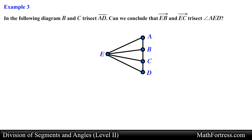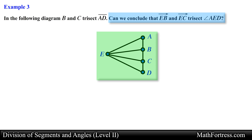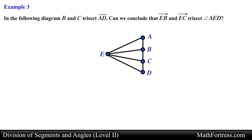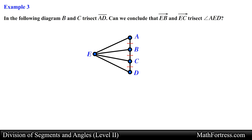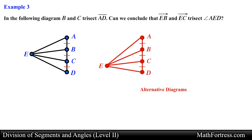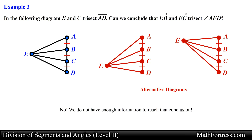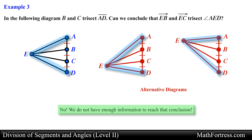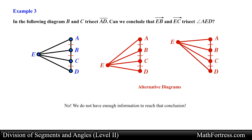Let's take a look at the next example. In the following diagram, point B and point C trisect segment AD. Can we conclude that ray EB and ray EC trisect angle AED? In this problem we are provided with a figure and are asked to determine if two rays trisect an angle. We are given that point B and point C trisect segment AD — in other words, segment AB is congruent to segment BC, which is congruent to segment CD. Notice that while segment AD has been trisected, that does not mean that angle AED has also been trisected. We would need more information to draw a decisive conclusion. So no, we cannot conclude that ray EB and ray EC trisect angle AED.